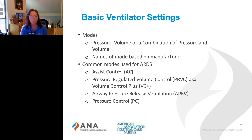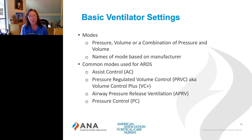The first mode is assist control — a volume mode, meaning the volume is set and guaranteed to be delivered. They'll have a rate and a tidal volume set, along with PEEP. For example, assist control at a rate of 18 with a tidal volume of 350 means the ventilator guarantees all 18 breaths will get a tidal volume of 350. If the patient decides to breathe 25 or 28 breaths per minute, those extra breaths will also receive the full set tidal volume — whether the breath is ventilator-triggered or patient-initiated, they get the same tidal volume.